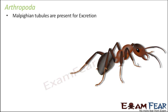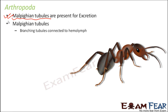Now how do they excrete their waste materials? They have specialized tubule-like structures called Malpighian tubules, which are used as excretory organs. These are branched tubules connected to the hemolymph. In case of arthropods, they do not have blood — they have a fluid called hemolymph, where blood and lymph are not distinguished from each other but are mixed together. The Malpighian tubules are connected to this hemolymph.